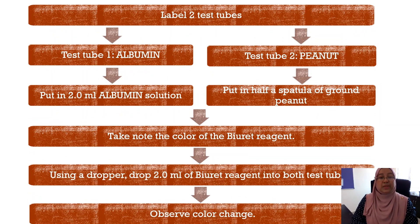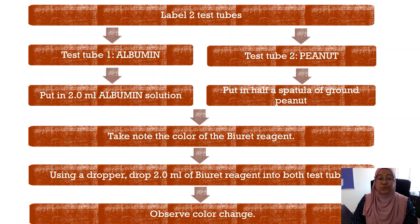This procedure is carried out to determine the presence of protein. Label two test tubes: test tube one for albumin, test tube two for peanut. In test tube one, put in 2 ml of albumin solution; in test tube two, put in half a spatula of ground peanut. Take note of the color of the Biuret reagent, then using a dropper, add 2 ml of Biuret reagent into both test tubes and observe any color changes.